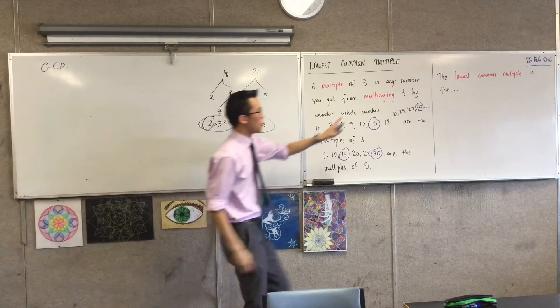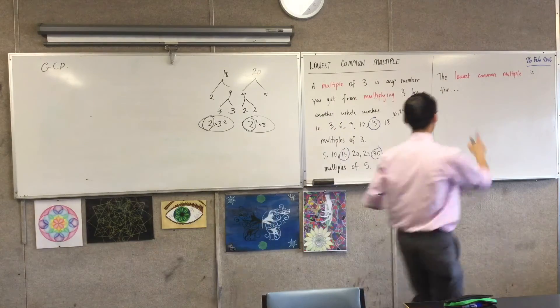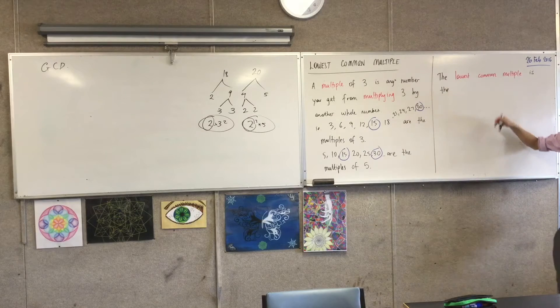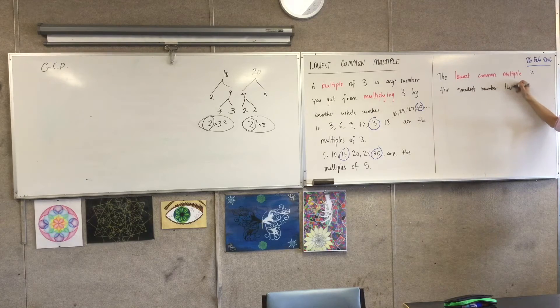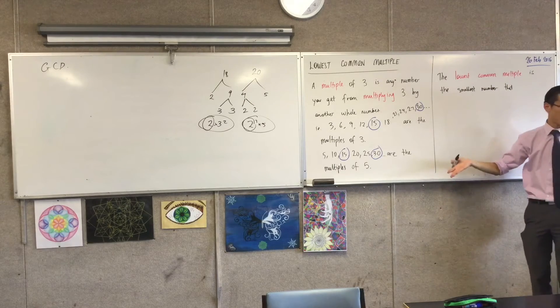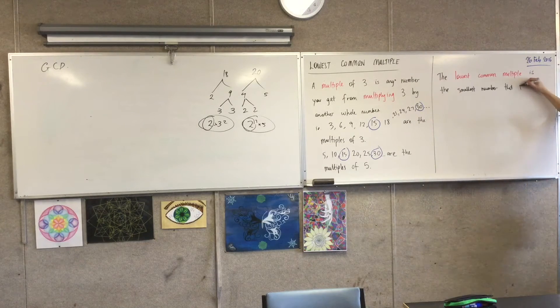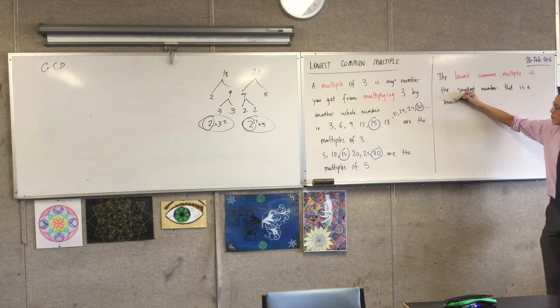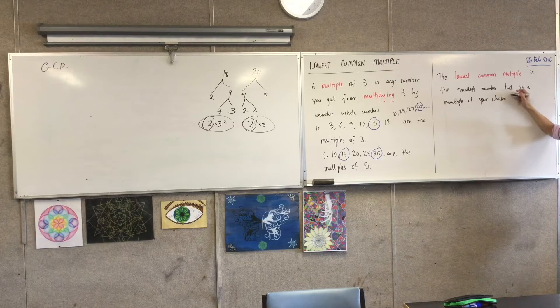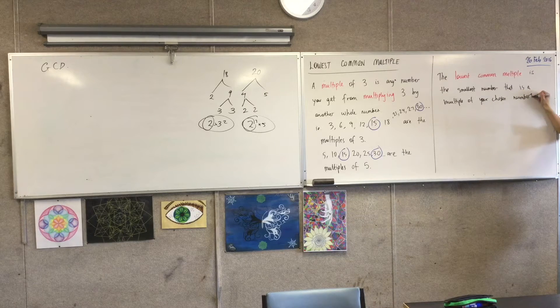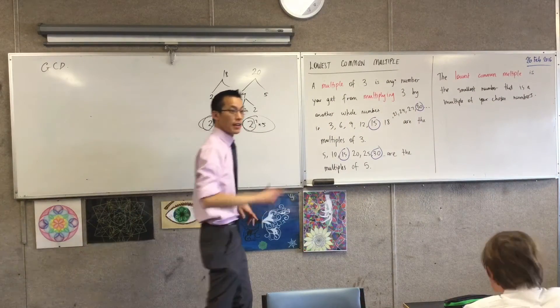But what I'm looking for is the lowest common multiple. So, the lowest common multiple is, we can finish this sentence now before I get to your question, Raj. The lowest common multiple is the smallest number that is a multiple of both of the ones you're interested in. Or maybe you've got 3 numbers or 4 and you want something that's a multiple of all of them. That is a multiple of your chosen numbers, like, say, 3 and 5. Yes?